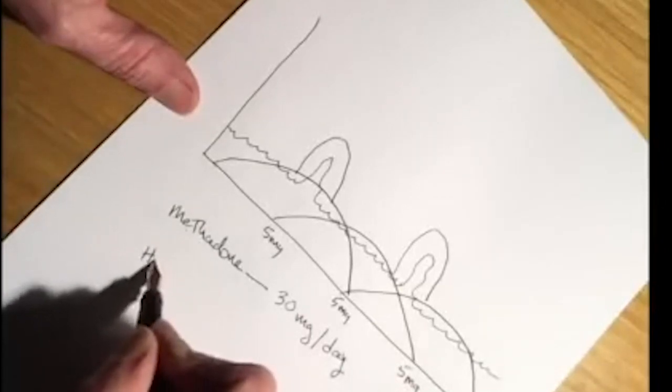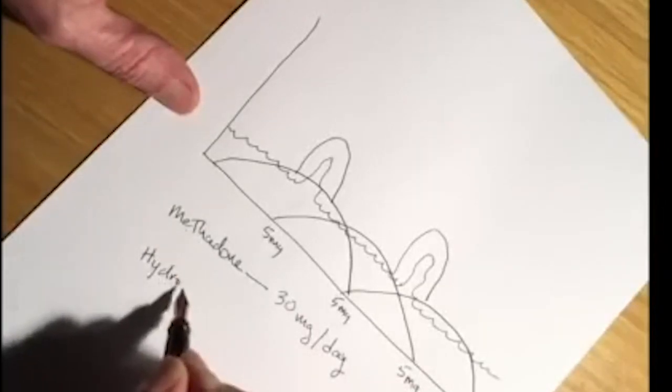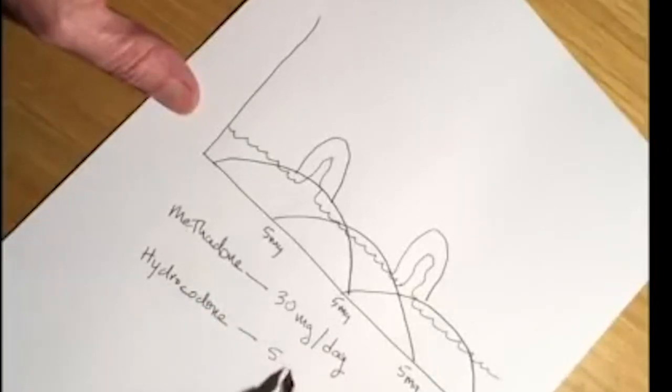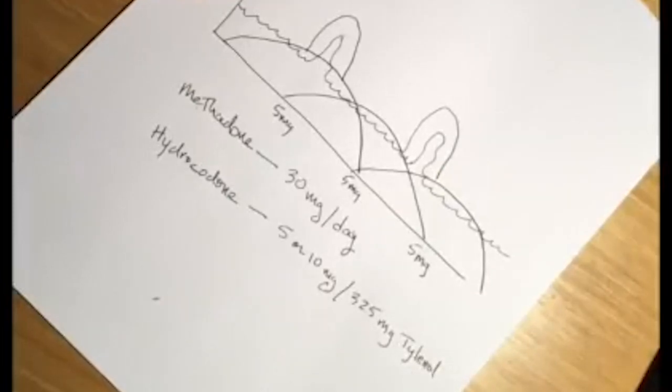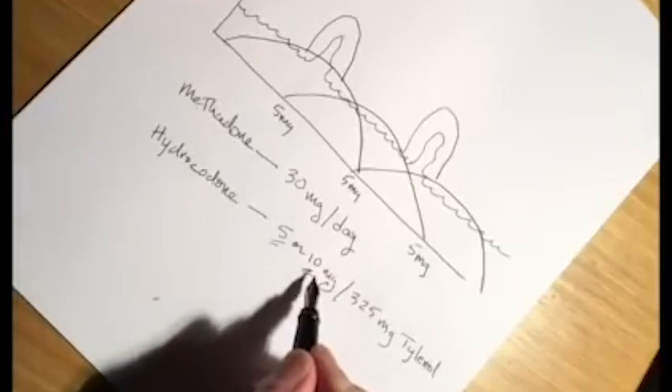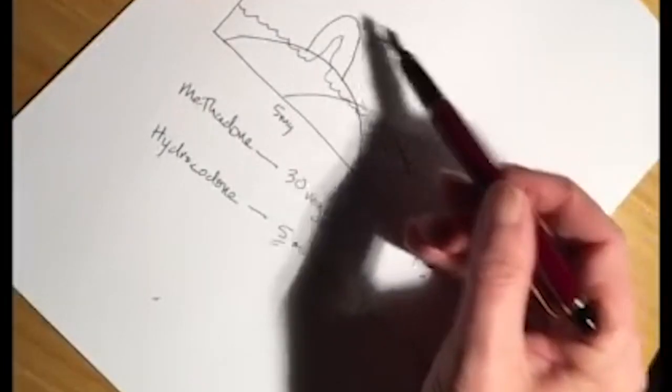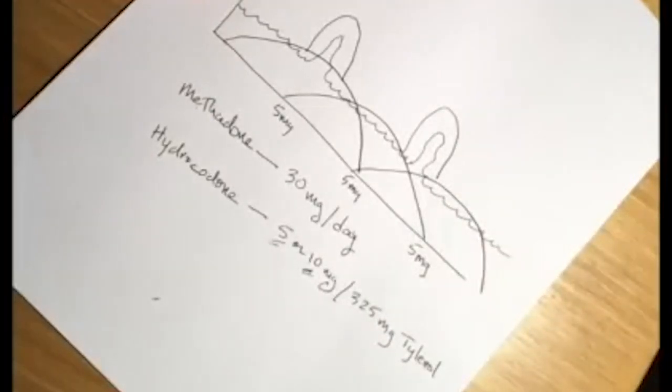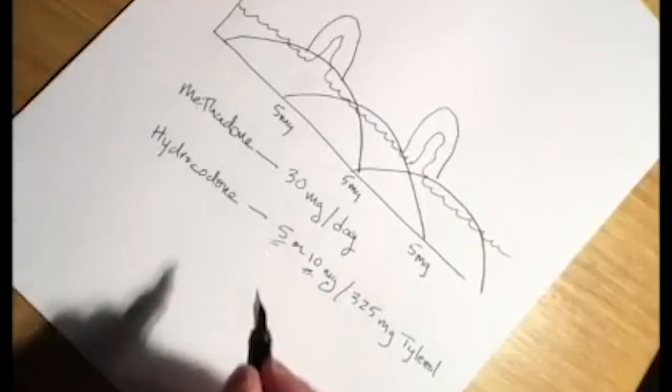Then if we look at the hydrocodone preparations, those are generally 5 or 10 milligrams per dose, plus 325 milligrams of Tylenol. I'd start off with a 5, or I'd give them a 10 and have them cut it in half, and take half of one to cover these spikes. And I always thought that was a very elegant way of doing this.